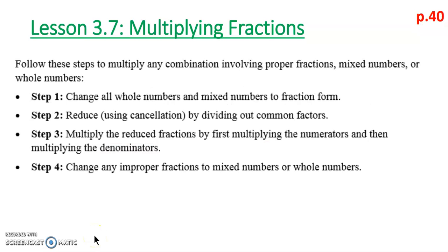There are four steps to multiplying any combination of fractions — proper fractions, mixed numbers, or even whole numbers. Step one: make sure we change all whole numbers and mixed numbers to fraction form, specifically an improper fraction. Step two: reduce using cancellation by dividing out common factors. Step three: multiply the numerators, then multiply the denominators.